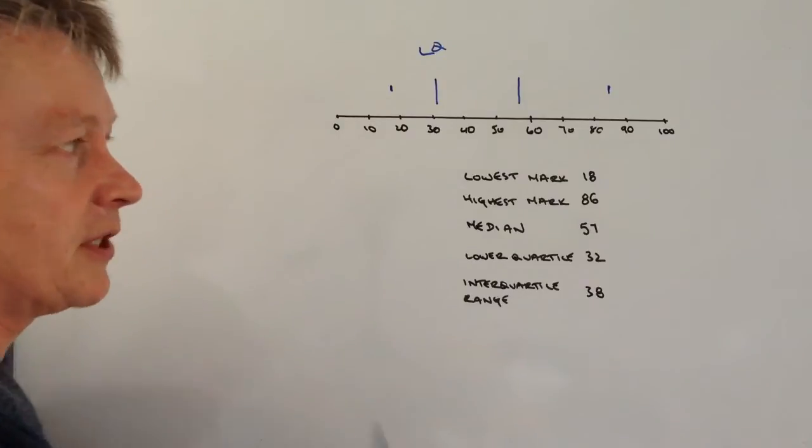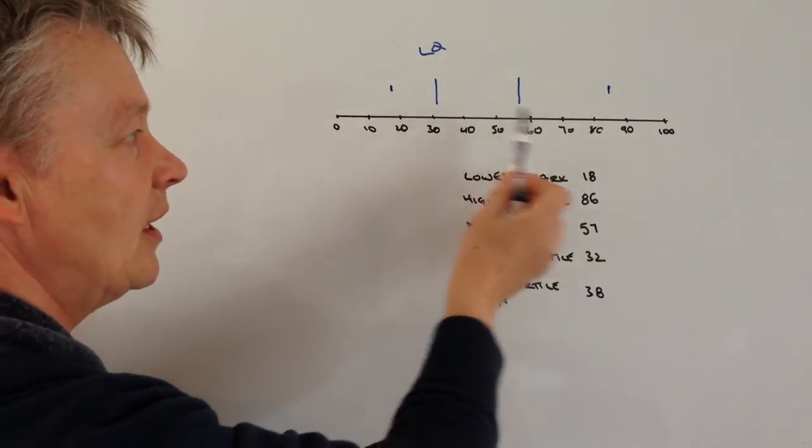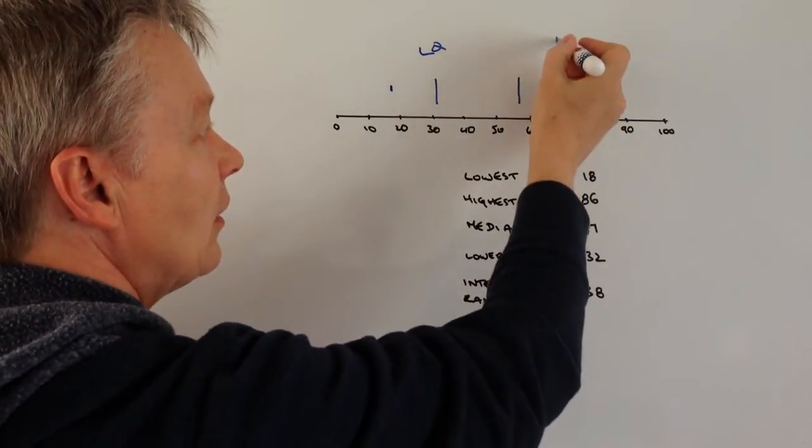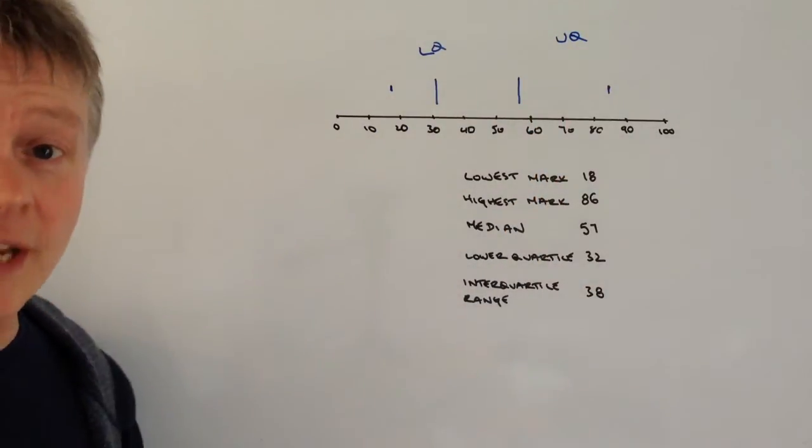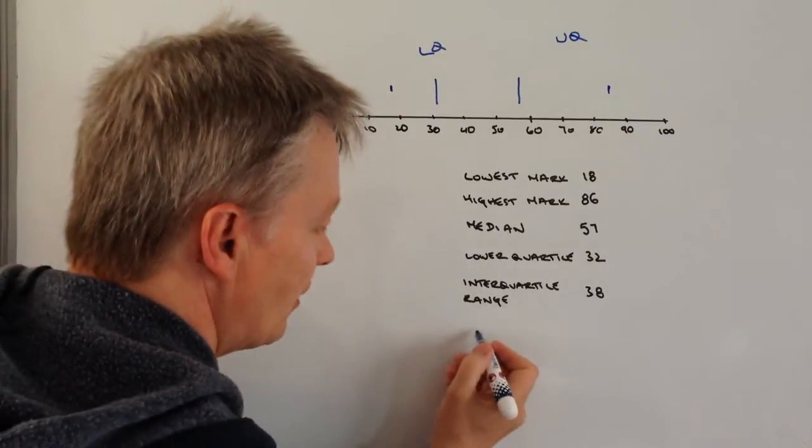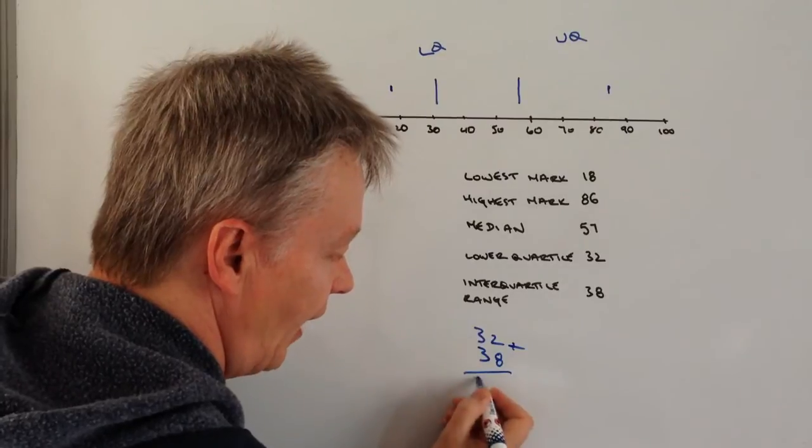The interquartile range will tell us that the difference between the lower quartile and the upper quartile is going to be 38. So basically, what I'm going to do is add 32 plus 38, and if I add those together,